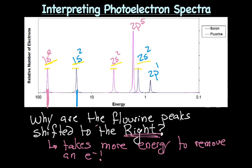The ones to the right take more energy to remove an electron. So again, why consistently at every single peak is fluorine shifted to the right? Why does it take more energy to remove a valence electron, a 2p5 electron from fluorine than the 2p1 electron? Why?